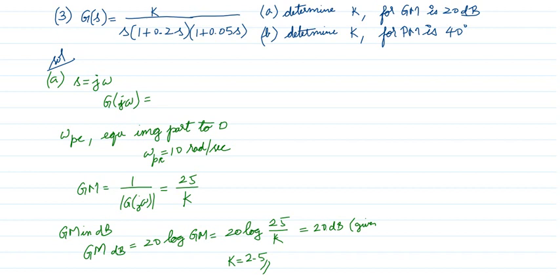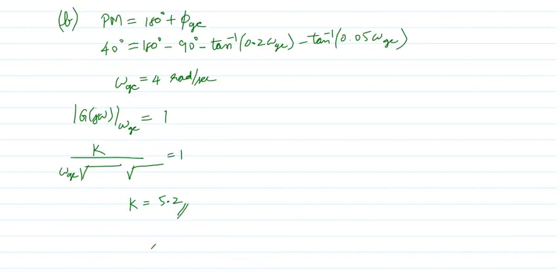For part b, find k for phase margin = 40°. Use the same approach: set up the phase margin equation, move the tan inverse terms, apply the tan A plus B formula as worked out in the previous problem, find ω_gc = 4, then substitute into the magnitude = 1 condition and solve for k = 5.2. Try to solve this on your own and put any doubts in the comment section.